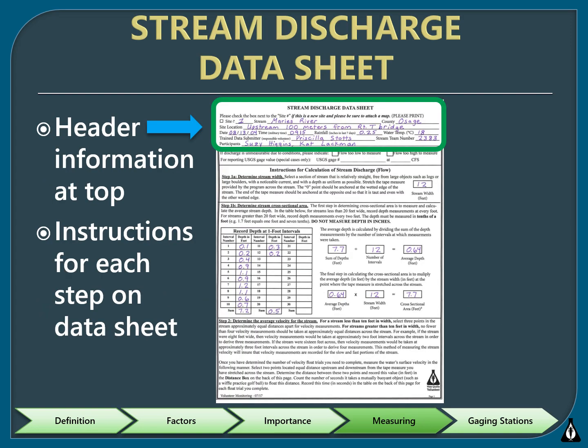Here is an example of a stream discharge data sheet. These can be found and printed at the moststreamteam.org website. The header information was covered in the site selection chapter — be sure to have this section filled out in its entirety for all data sheets collected. For this data sheet, there are detailed instructions for each step, and we will work through these together over the next slides.